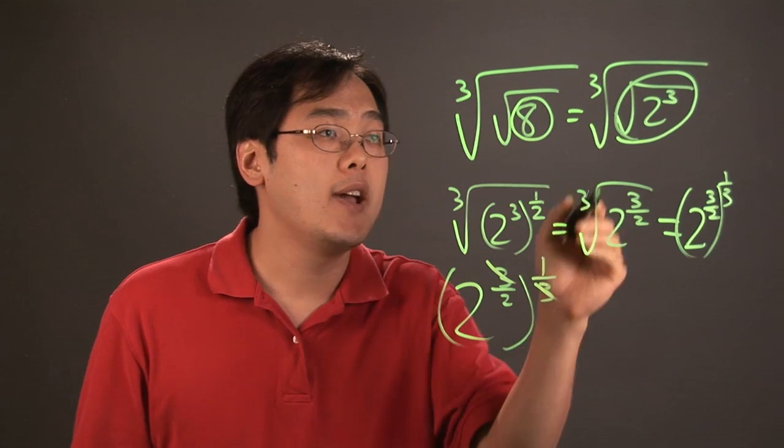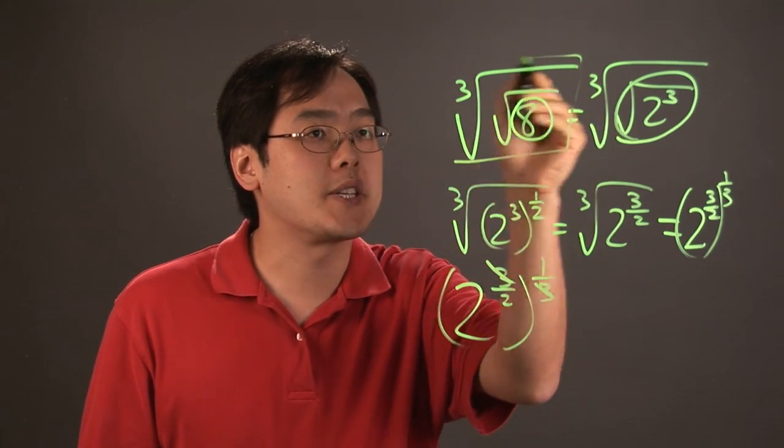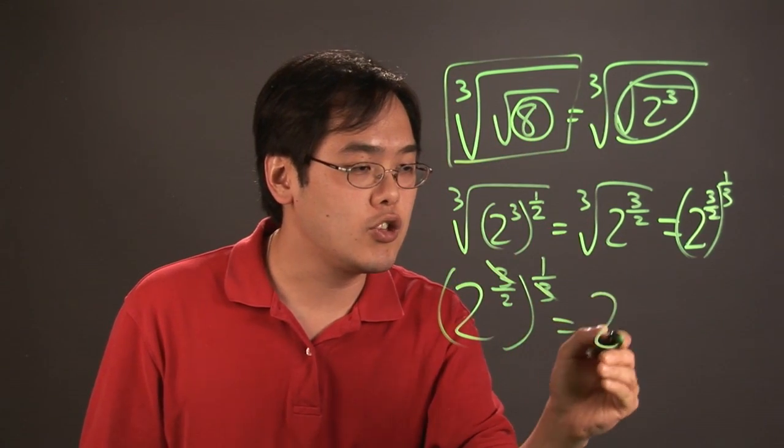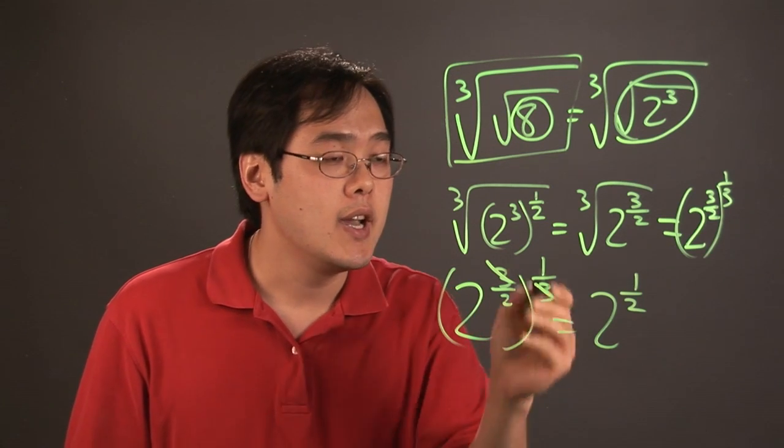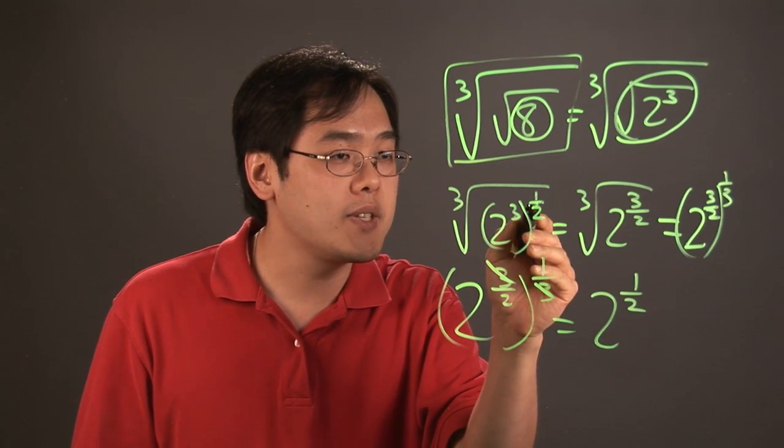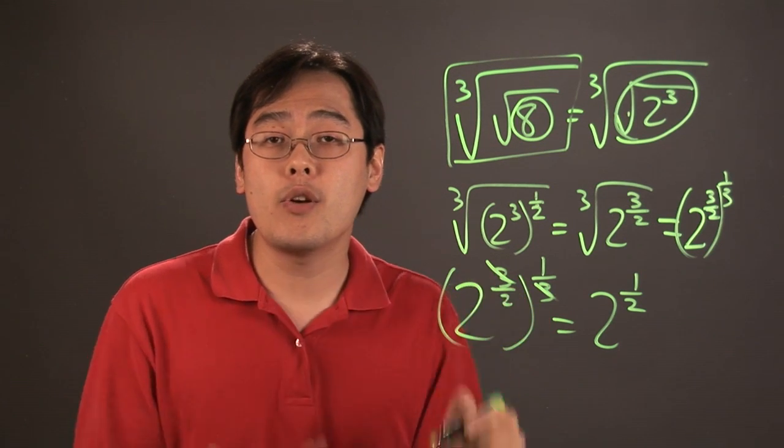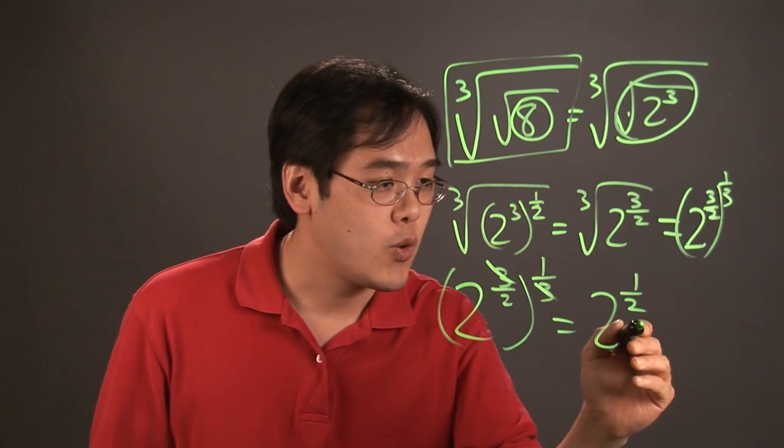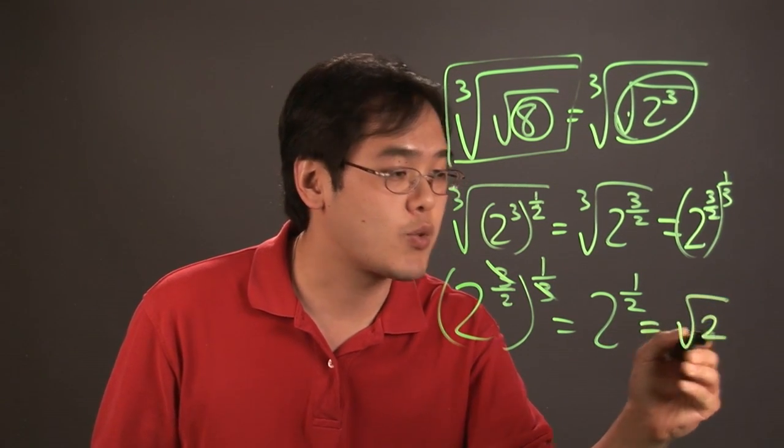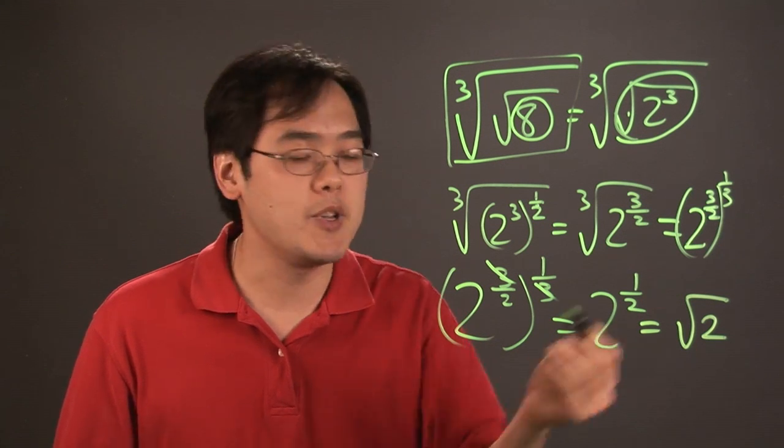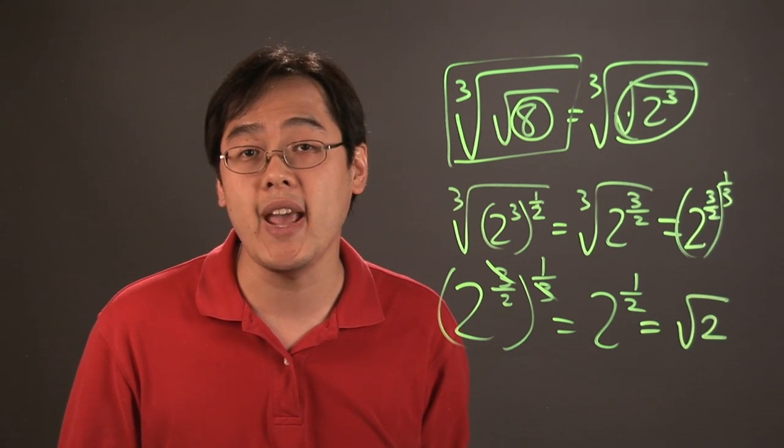So at the end of the day what seems to be a really imposing expression really ends up being 2 to the one-half power. And if you remember correctly from before, if you raise something to the one-half power it really means it's a square root. So the third root of the square root of 8 really boils down to simply the square root of 2. So I'm Jimmy Chang and that's the answer to what is the third root of the square root of 8.